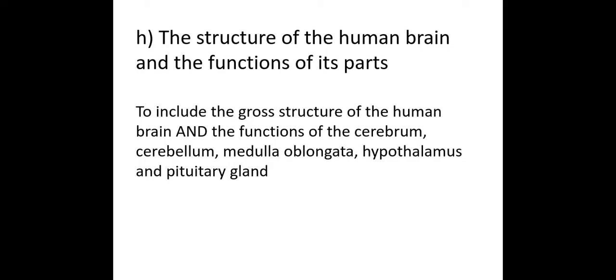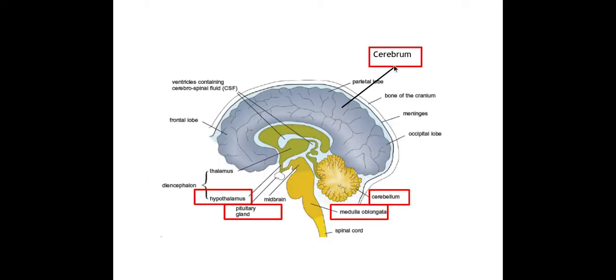So here are those five parts. The first one is called the cerebrum, and the cerebrum controls voluntary actions such as learning, memory, personality, and conscious thought. The bits here in the red box are the only parts of the brain that you need to know for the biology specification.